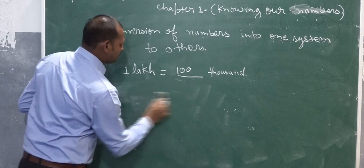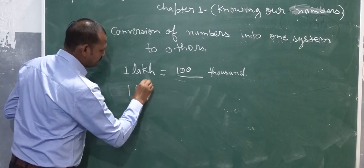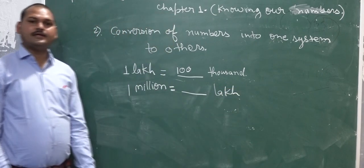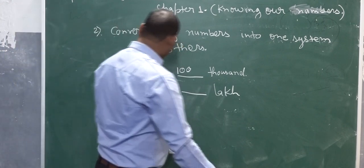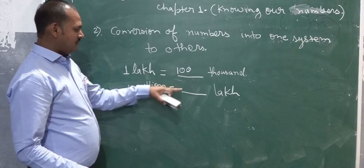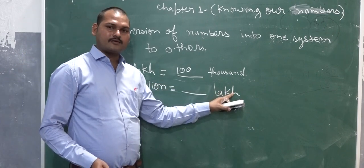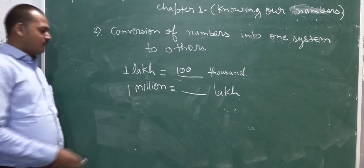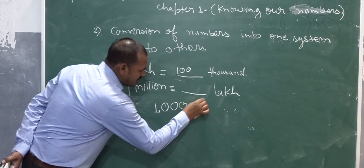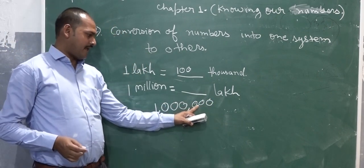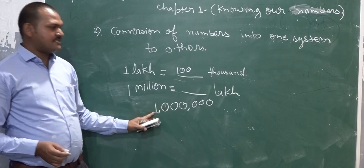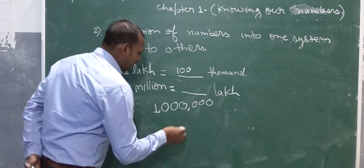Now, one million is equal to how many lakh. First we write what is the value of one million. One million in the international system has ones, tens, hundreds, thousands, ten thousands, hundred thousands, then millions. So now if we write this in the Indian system, what is the number?